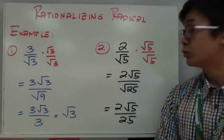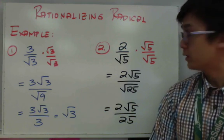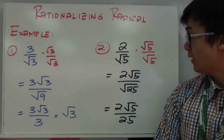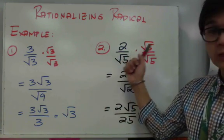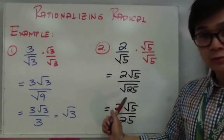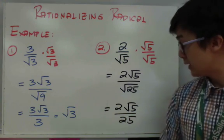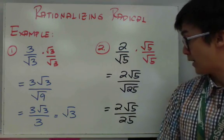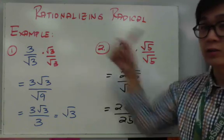At yung number 2 naman, 2 over square root of 5 — yung radical niya sa denominator is square root of 5. Multiply niyo lang yung numerator and denominator ng square root of 5 para ma-eliminate yung radical symbol. So, you have 2 times square root of 5 is 2 square root of 5, and square root of 5 times square root of 5 is square root of 25, which gives you 2 square root of 5 over 25. Since hindi mo naman pwedeng i-simplify yung 2 and 25, ito na yung rationalized fraction. Wala nang radical, so na-rationalize nyo na siya.